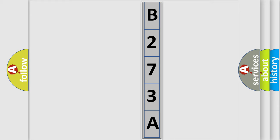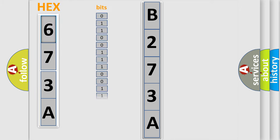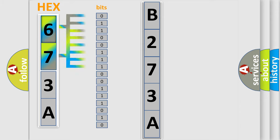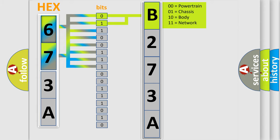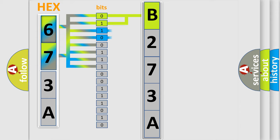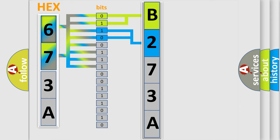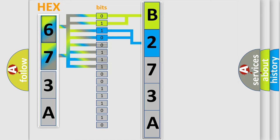The error code is split into two bytes consisting of 16 bits. One bit is the basic unit that each computer works with. The bit has two logical states: zero, low level, and one, high level. By combining the first two bits, the basic character of the error code is expressed. The next two bits determine the second character. The last bits of the first byte define the third character of the code.